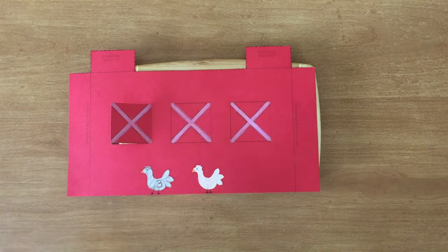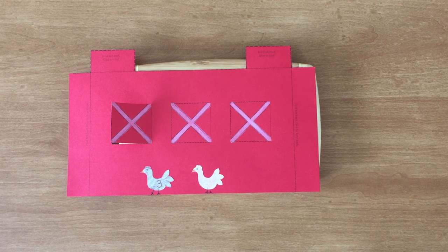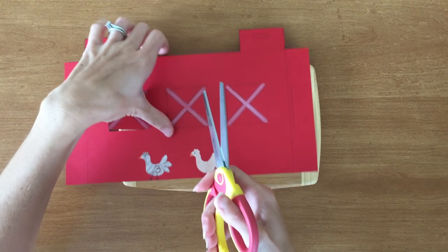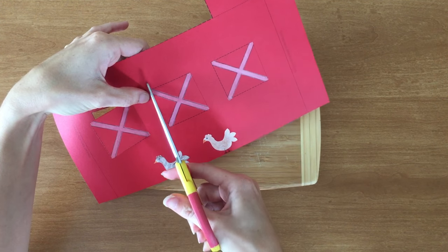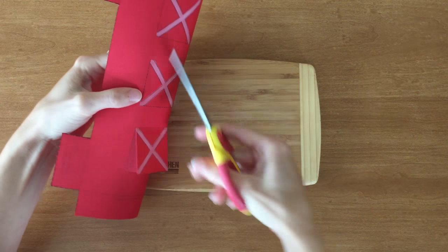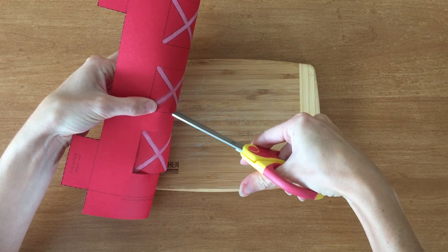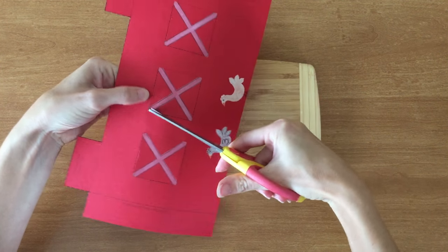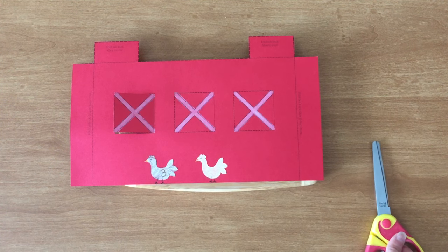If you do not have an exacto knife you can use scissors. It's a little harder. A couple options. One is you can just poke the scissors in there on the line and keep cutting. Or you can fold your paper a little bit so that you can start a cut on the line and then work the scissors in there and keep going around. So do that for all three windows.